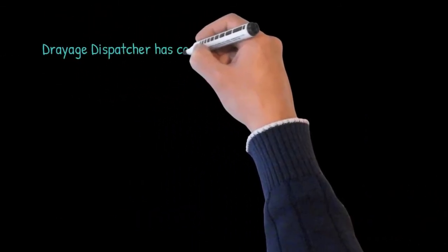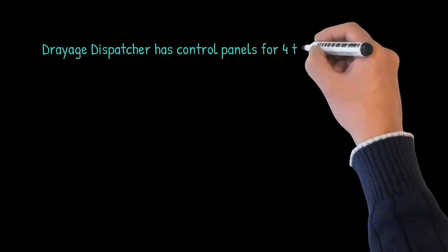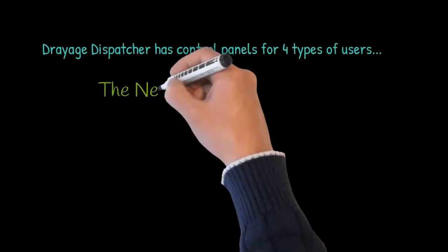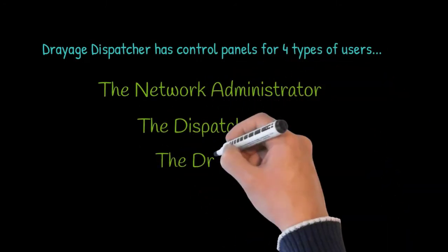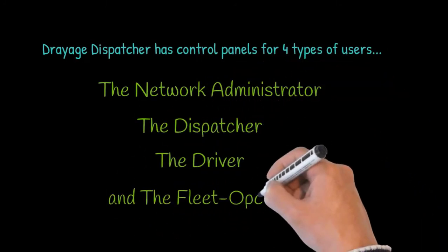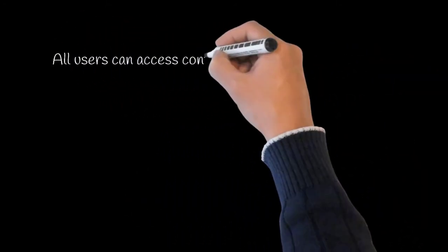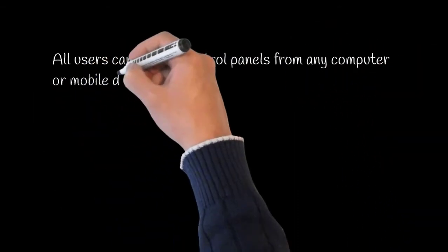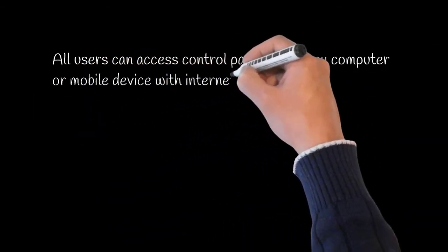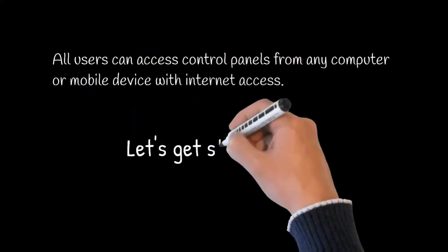Drayage Dispatcher has control panels for four types of users. All users can access the control panel from any computer or mobile device with an internet connection.